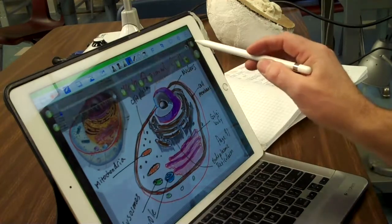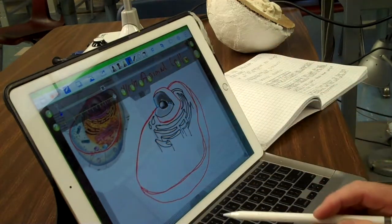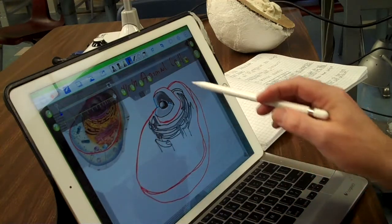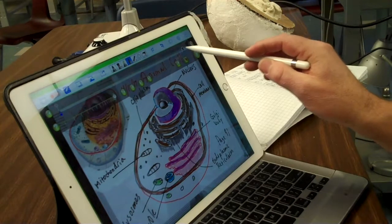I stepped them through how to draw the animal cell and all of its parts. And then we did the labeling as well. So that was step one.